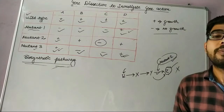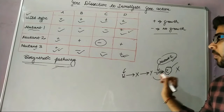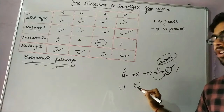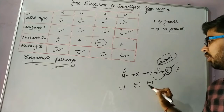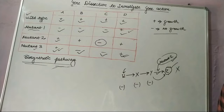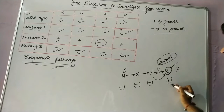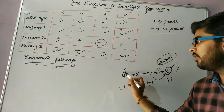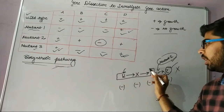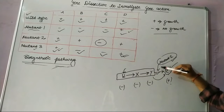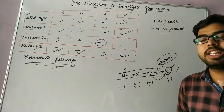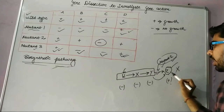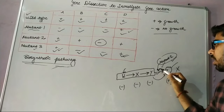When W is added there is no growth; when X is added there is no growth; when Y is added there is no growth; but when Z is added there is growth. This suggests that compounds showing no growth are found before the mutant region in the pathway, while compounds that support growth are found after the mutation region.